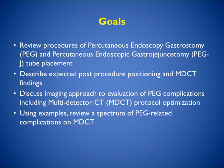In this talk we're going to review the procedures of PEG and percutaneous endoscopic gastrojejunostomy, or PEG-J tube placement. We'll describe the expected post-procedure positioning and CT findings. We'll discuss the role of imaging for detecting and evaluating suspected or unsuspected complications, and we'll show a number of cases which will really help you get an appreciation of what you should be looking for.